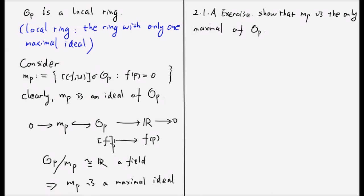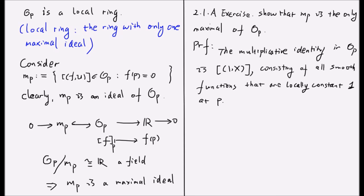Now let's prove that M_p is actually the only maximal ideal of O_p. First we notice that the multiplicative identity of the ring O_p is actually the equivalence class of the constant function 1 on the manifold X. This germ actually contains all the locally constant 1 functions at p. For any equivalence class or germ [f,U] that is not in M_p,